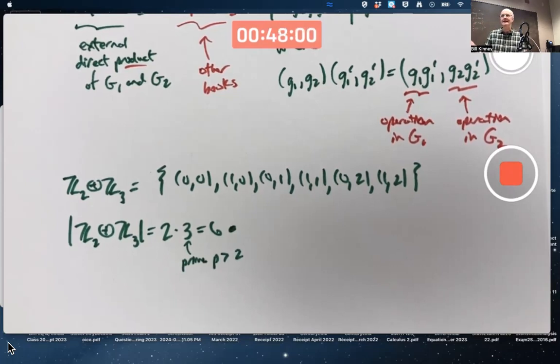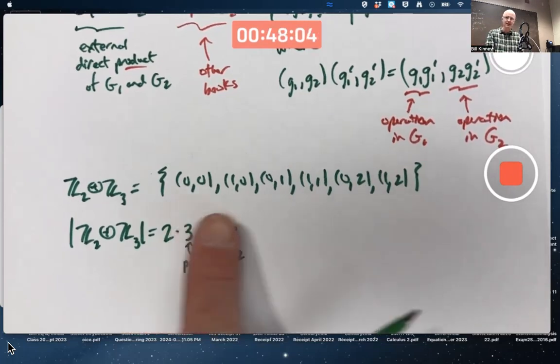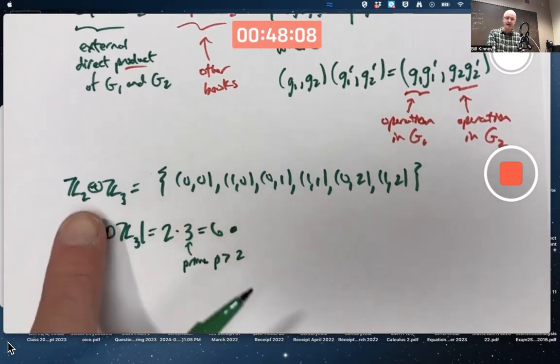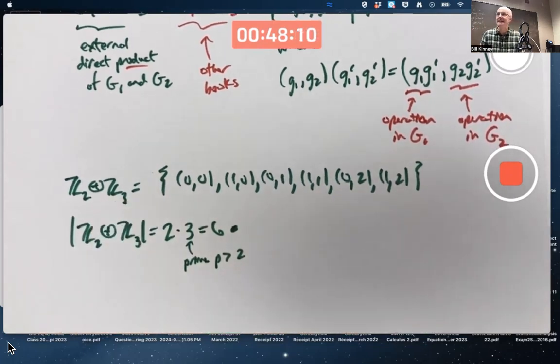It's got to be isomorphic to one of those two. Which one is it? I hope intuitively you would think the group operation here is going to be abelian, because these are abelian. It's got to be Z6, not D3.